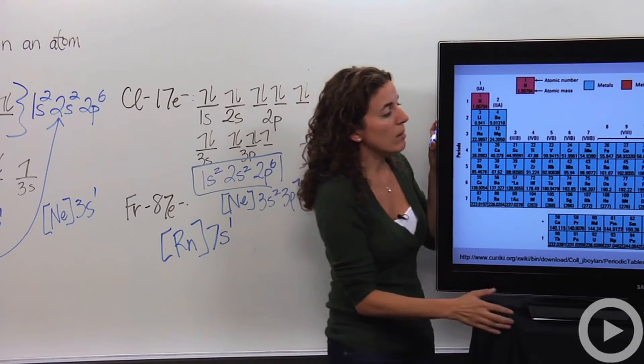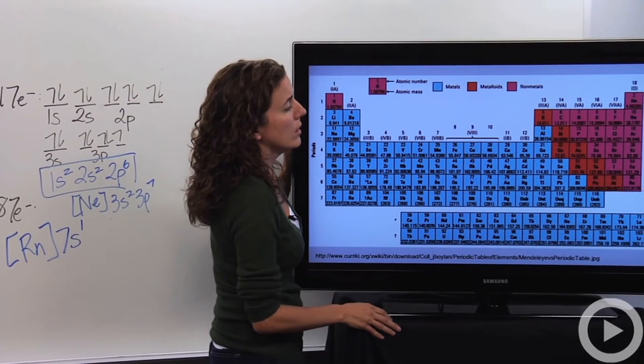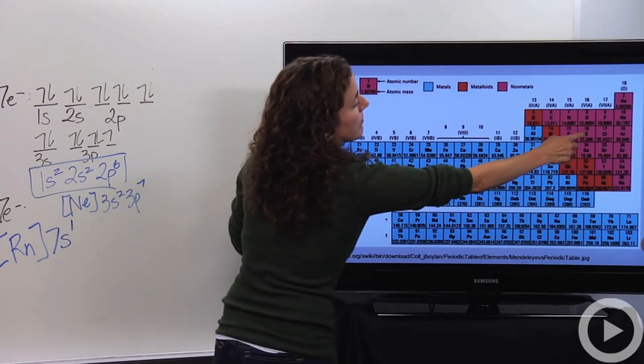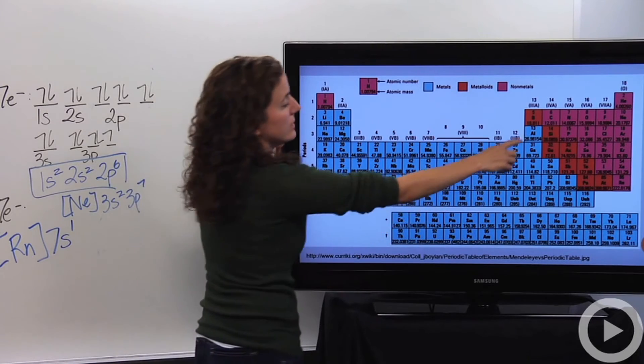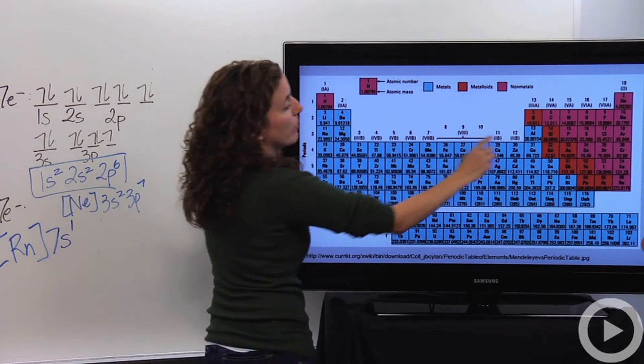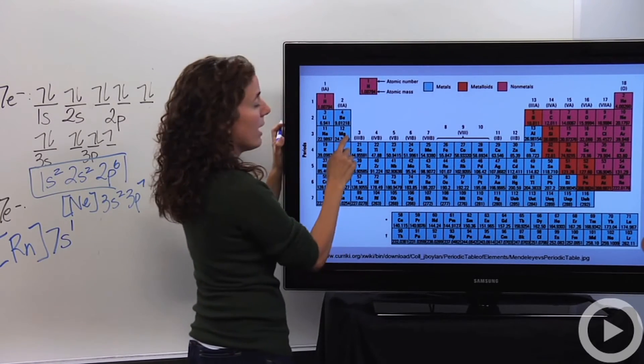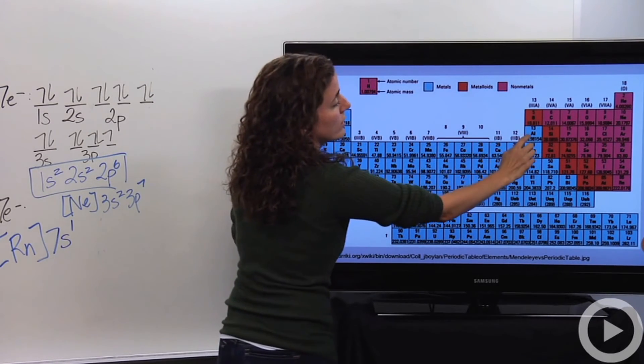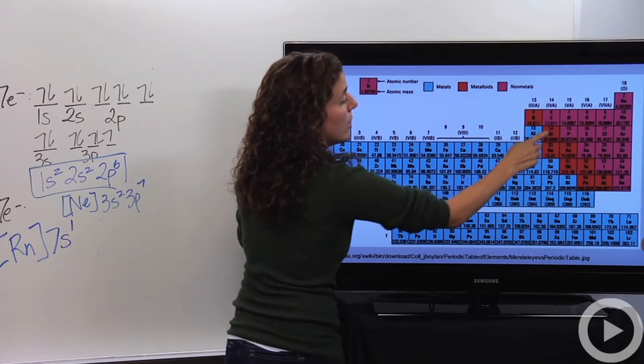If we were to talk about something, let's say, let's do sulfur. Sulfur, notice it's in the third period. So the noble gas configuration would be neon, 3s. And then we go over to the p's, one, two, three, four, p4.